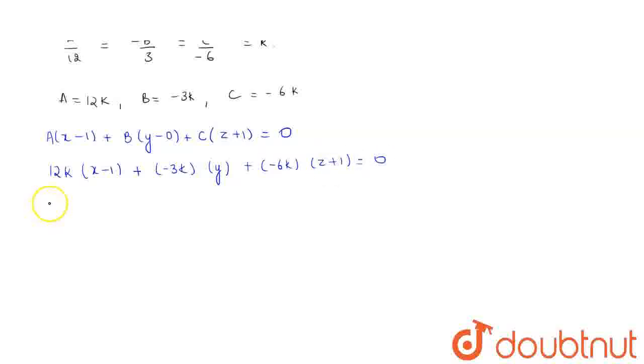So we can take 3k common: 4(x-1) minus y minus 2(z+1) equals to 0.